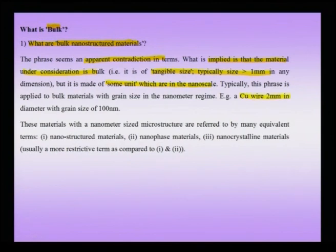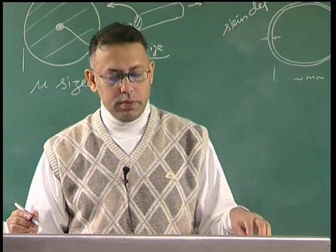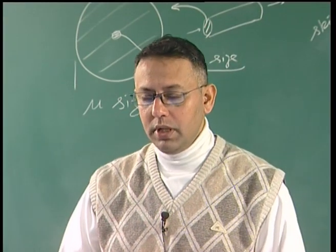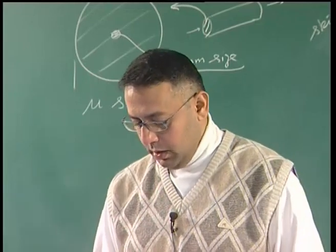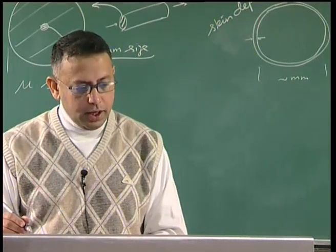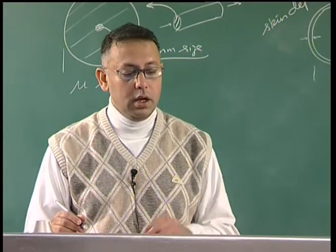Additional terms used to describe bulk nano structured materials include nano structured materials, nano phase materials, and nano crystalline materials. What is referred to is that the end product is a tangible material, with some component within the material that is nano structured. A more important question is: what are bulk properties? And we will also take up what is a bulk dimension later.